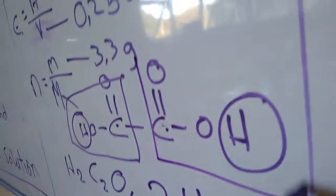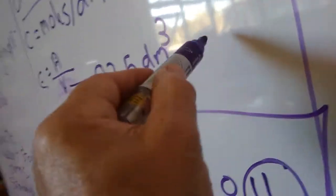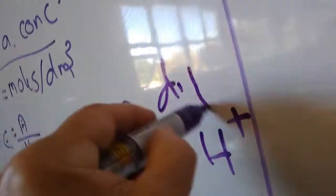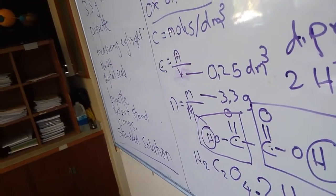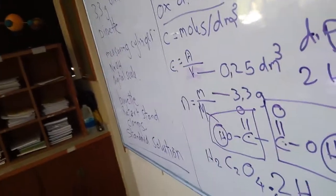So this is what we call a diprotic acid. It's twice acid. Maybe you've never heard of this before. Fine. So let's give the balanced equation.